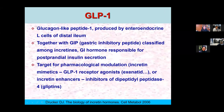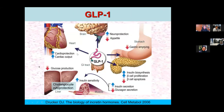GLP-1 is glucagon-like peptide 1, produced by enteroendocrine L cells in the intestine. Together with gastric inhibitory peptide, they are classified among so-called incretins — hormones responsible for postprandial insulin secretion. GLP-1 is also a target for pharmacological modulation. From diabetology we know GLP-1 receptor agonists such as exenatide, as well as enhancers which are inhibitors of DPP-4 enzymes, drugs called gliptins, which are very popular in clinical use.